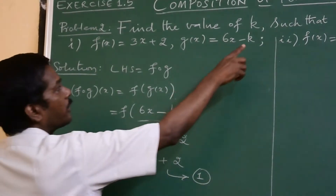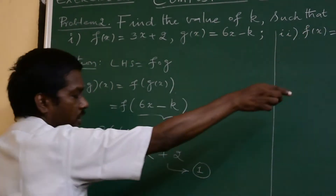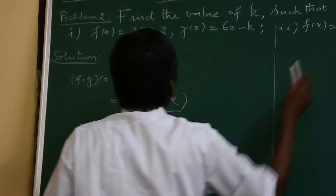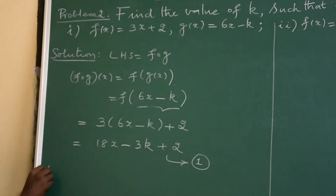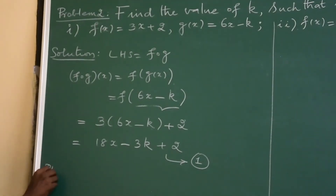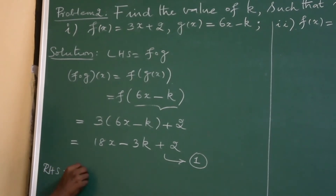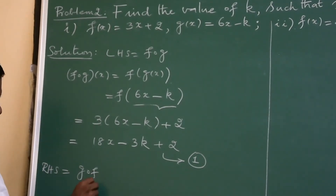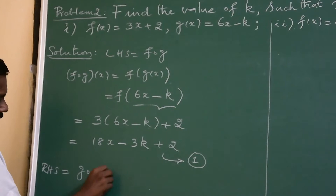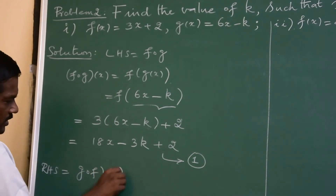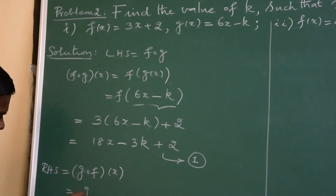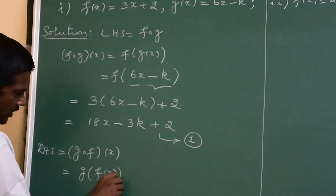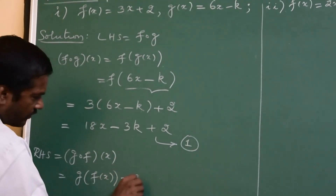Now we compute g composite f, which is the right hand side. G composite f of x will be g of f of x.